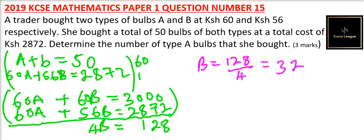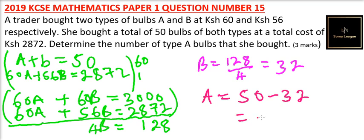So barbs of type B were 32. Meaning barbs of type A were 50 minus 32, which gives you 18. So barbs of type A were 18. That's how you approach that question — you are being tested on whether you know how to solve simultaneous equations, and you'll be able to get full marks.